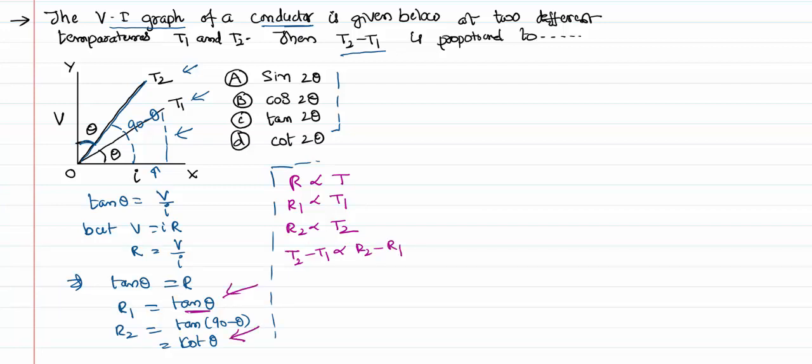In the place of R1 and R2, I can substitute these values that we have derived. That implies T2 minus T1 is directly proportional to R2, which is cot θ, minus R1, which is tan θ. That's actually an answer, unfortunately that's not the answer we have in the options, so we have to convert that into the available options.